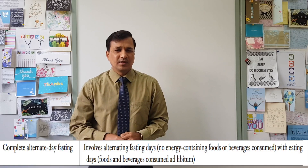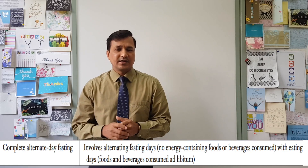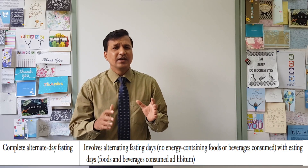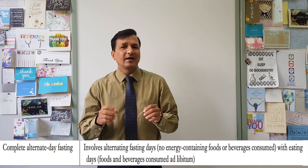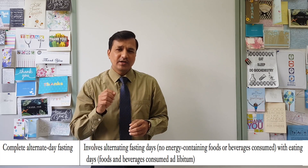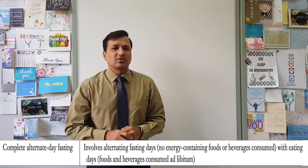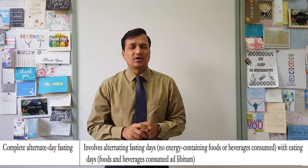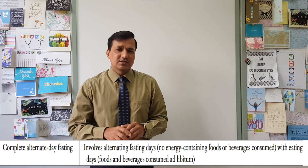One type of intermittent fasting is complete alternate day fasting. In complete alternate day fasting there is a feast day and a fast day. On the feast day, a person takes whatever food they want in ad libitum — as much quantity as they wish. During the fast day, nothing is taken except water; no sweetened beverages or anything of that sort.